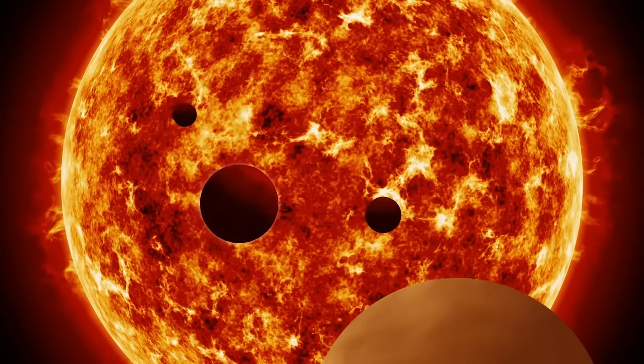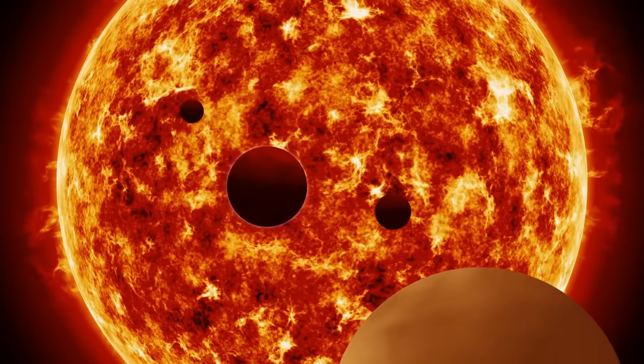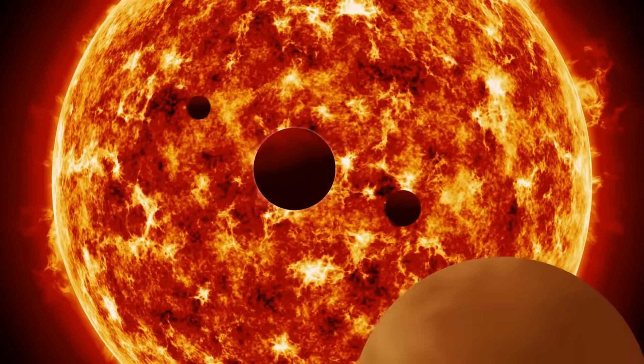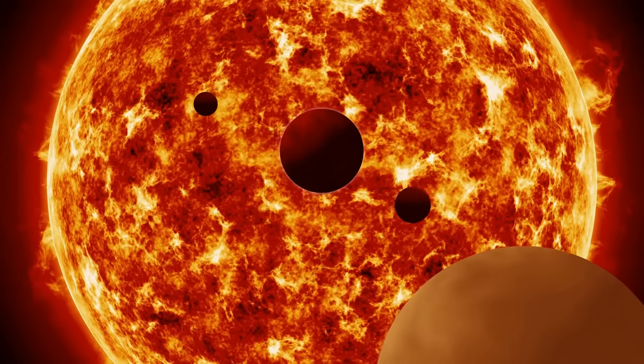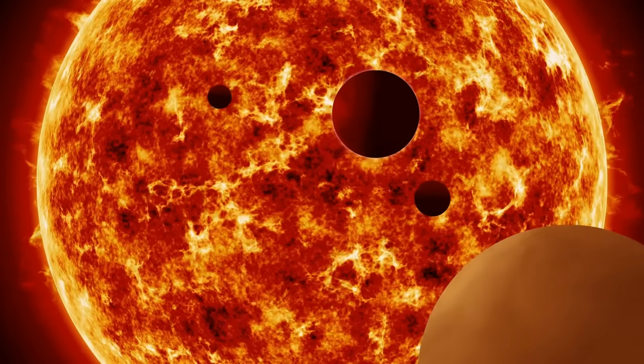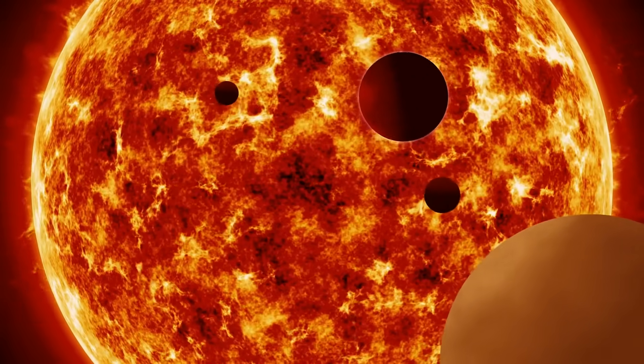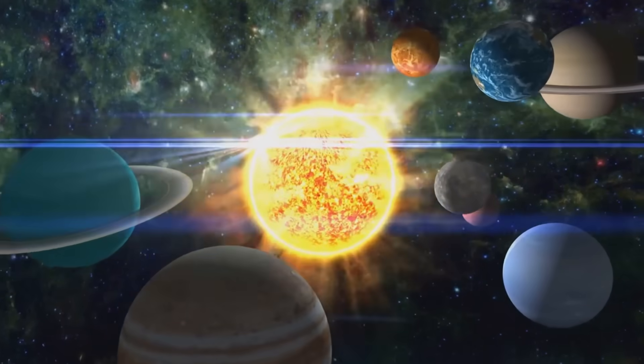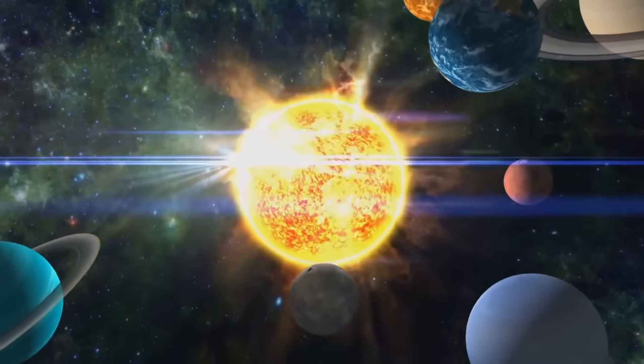Could it be that our planets are mimicking electrons, orbiting the Sun which acts as their nucleus? Just like electrons, planets might be moving through different stages, or orbits without us observing their transition. They seem to pop in and out of existence in their respective orbits.